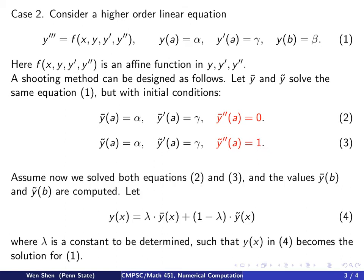So assume now we have solved both equations, and we have found the solution y bar and y tilde from a to b. Then we do a linear combination in the same way to form a new function, which we call y, with this lambda as weight, and 1 minus lambda as weight for y tilde. So the lambda shall be chosen such that this y now in equation 4 shall be a solution for equation 1.